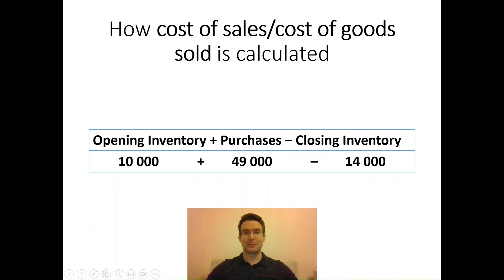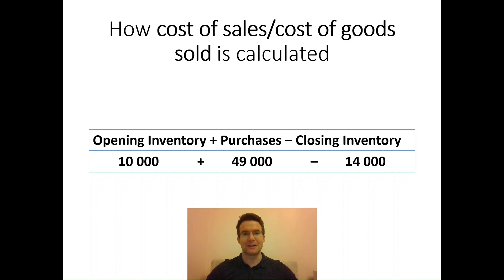Shown numerically, the formula looks like this: £10,000 worth of stock sitting in our warehouse at the start of the time period, most often a year, plus the purchases — £49,000 worth of purchases made within the year — minus the £14,000 we had left in our warehouse at the end of the year. That gives us a total cost of sales figure of £45,000. It's not as simple as just taking the purchases figure because we may not have actually used all of those purchases in order to generate sales. Hence, our cost of sales in this example would be £45,000.